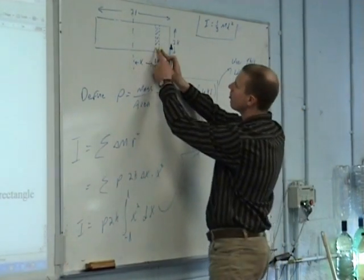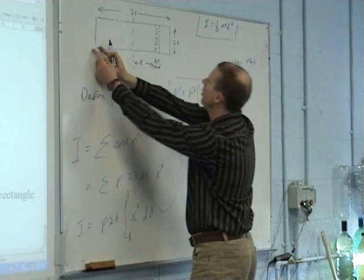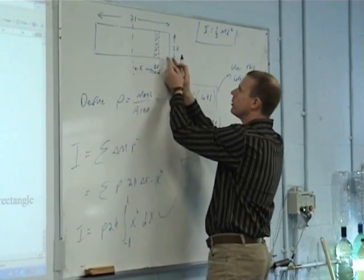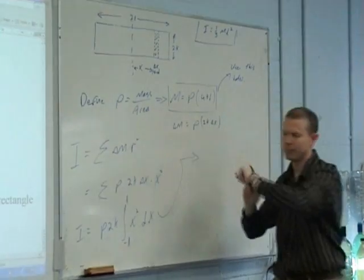And then the limits are minus L and L, because basically I'm taking that small dash from here all the way to the center and from there all the way to the center. So minus L to L.